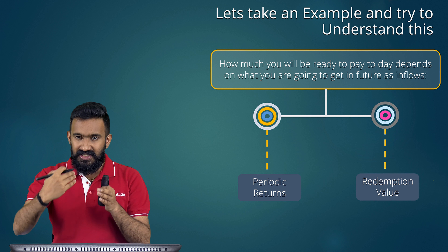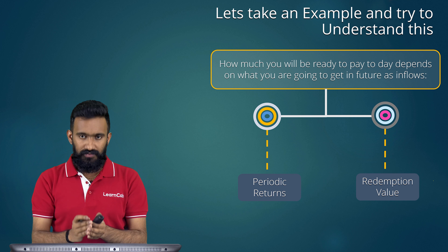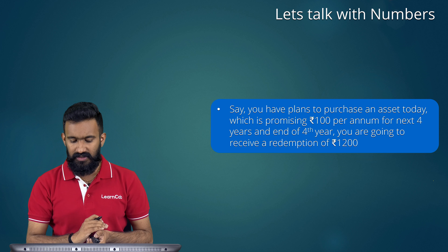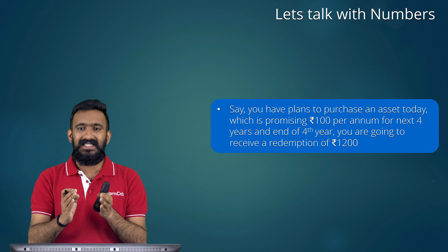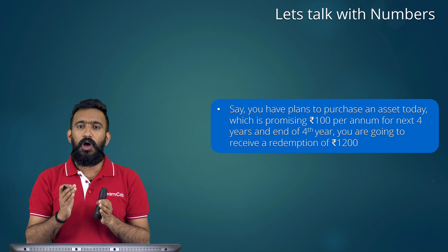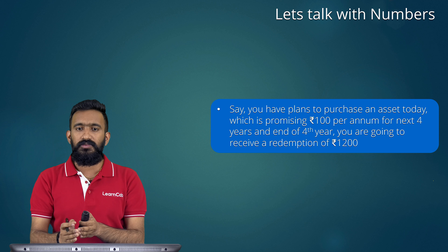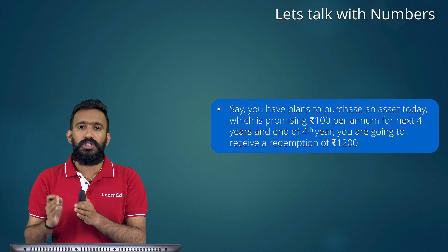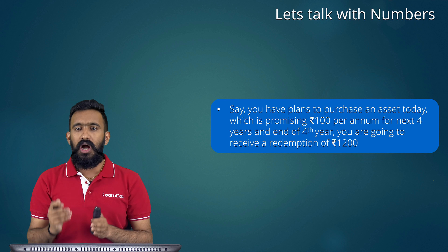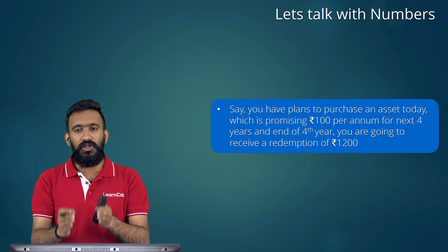The present value of these future returns — periodic returns and redemption value — would be the value of that particular asset. Now let's take some numbers. Say you have planned to purchase an asset today which promises 100 rupees per annum for the next 4 years, and at the end of year 4 you're going to receive a redemption of 1200 rupees. We will derive what could be the value you pay for this asset today — I will mark today as year 0.